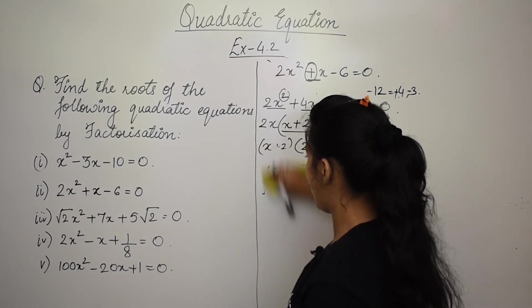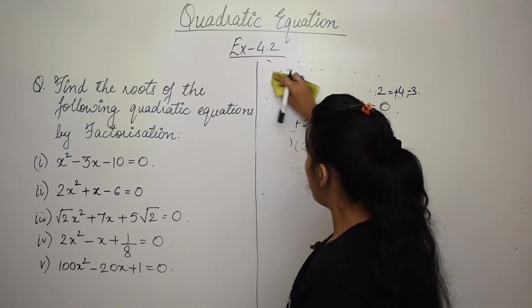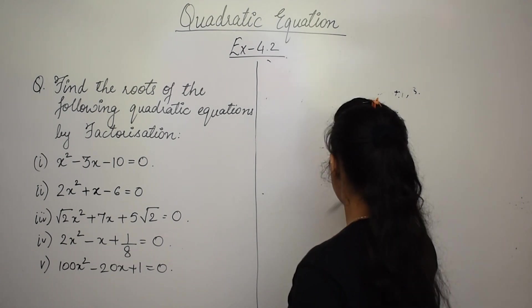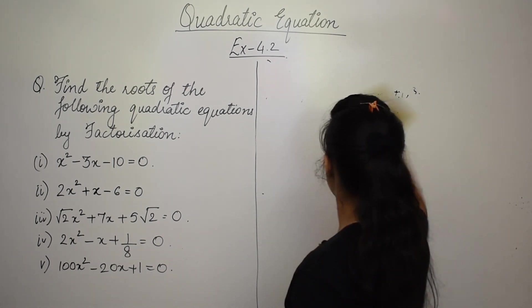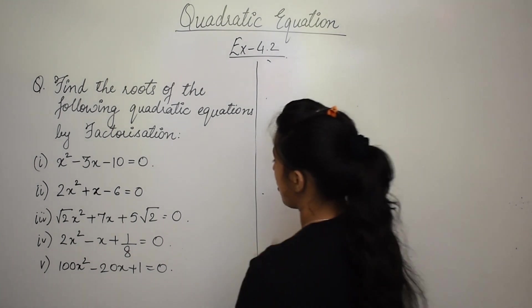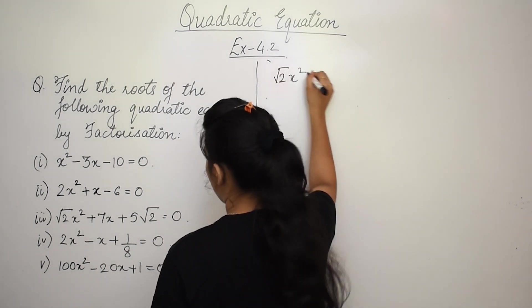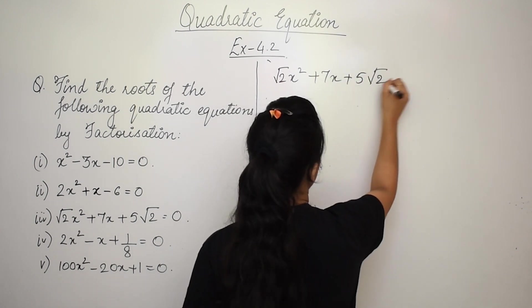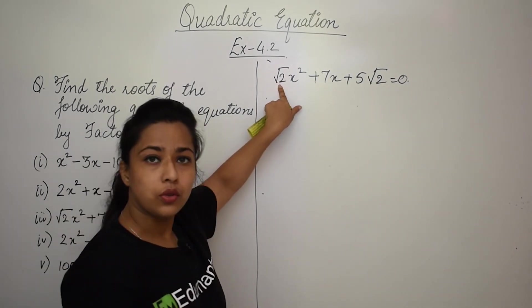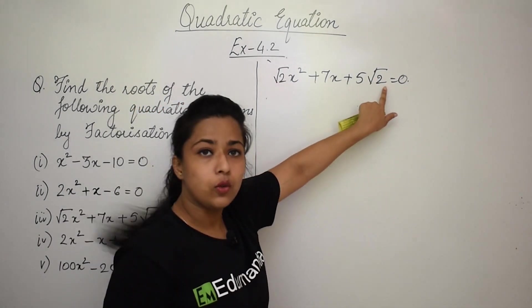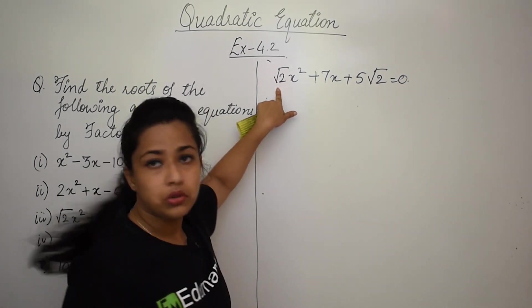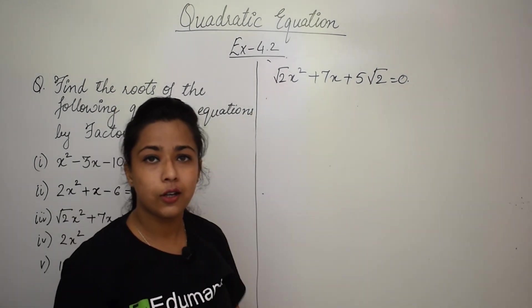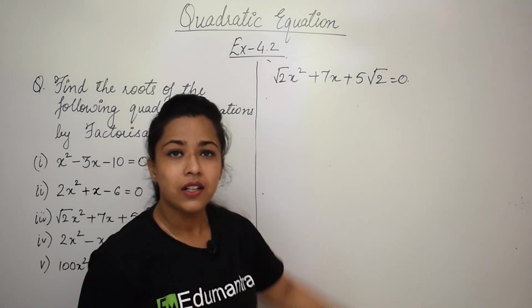The third equation is √2·x² + 7x + 5√2 = 0. Here A = √2 and C = 5√2. So A×C = √2 × 5√2 = 5 × 2 = 10. We need factors of 10 that add to 7.